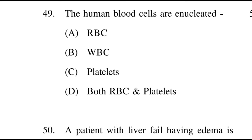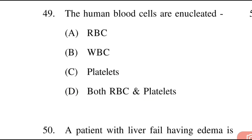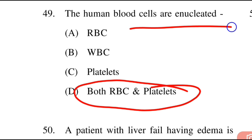Next question: Which human blood cells are enucleated? Options: A: RBC, B: WBC, C: platelet, D: both RBC and platelet. The right answer is D — both RBC and platelets are enucleated, meaning neither has a nucleus.